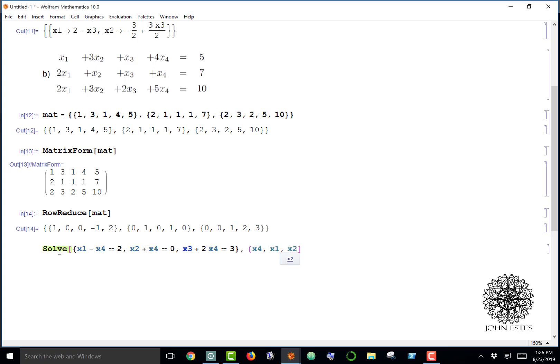I want this in terms of x4. Typically we want it in terms of our last variable. When I solve, there I have it: x1 is 2 plus x4, x2 is negative x4, and x3 equals 3 minus 2x4. Typically we would say then let x4 be t, t representing some arbitrary real number, and then we get an infinite number of solutions based off that.